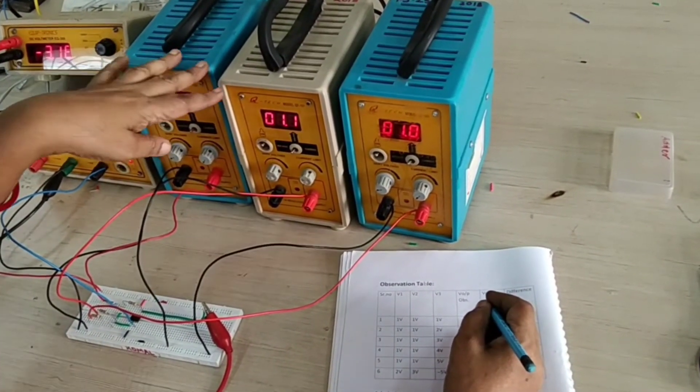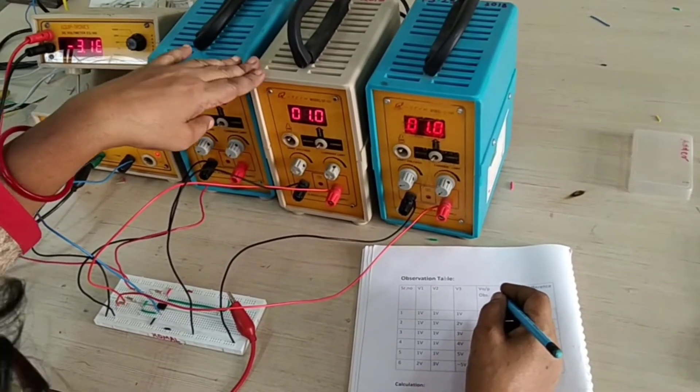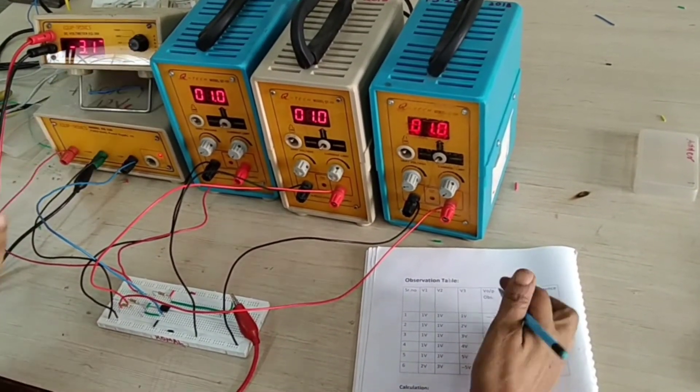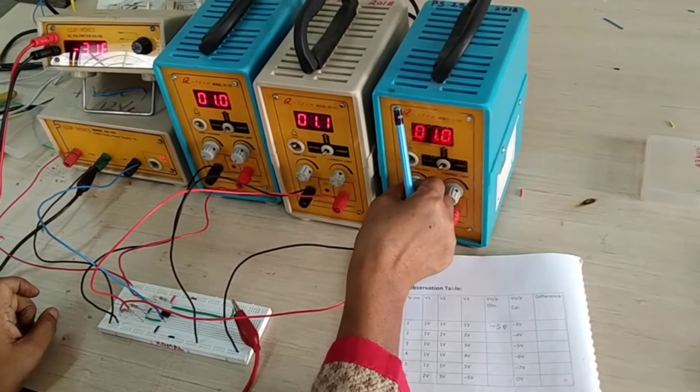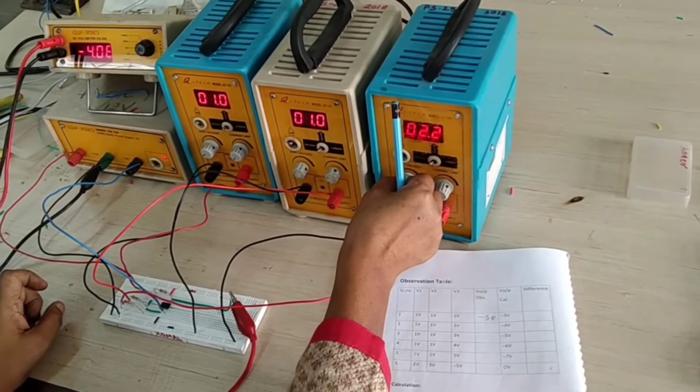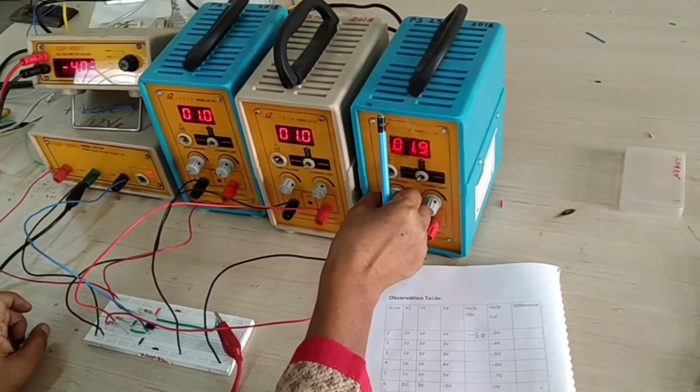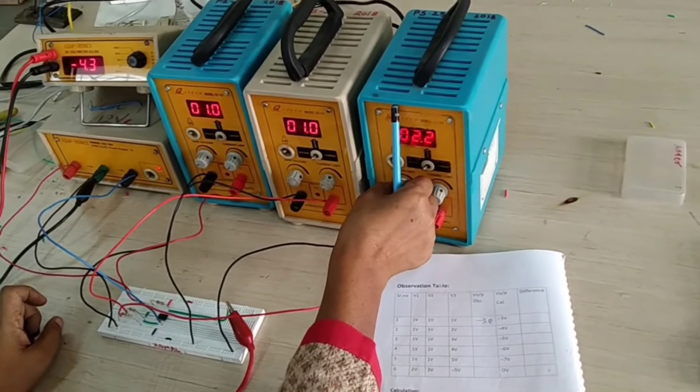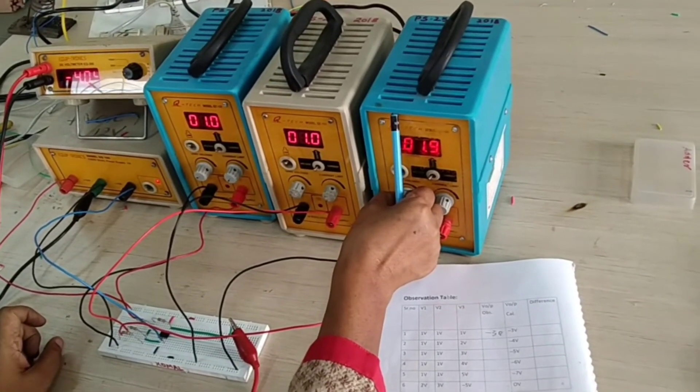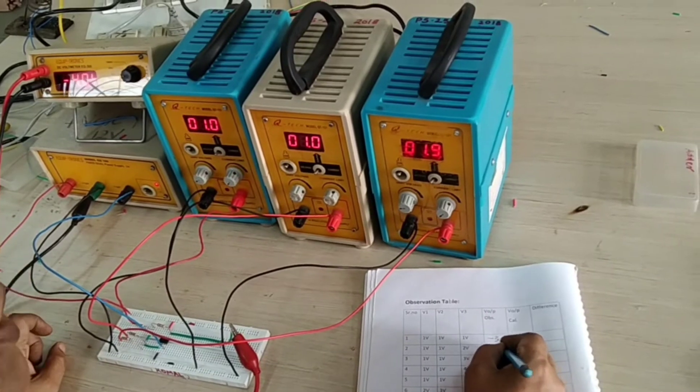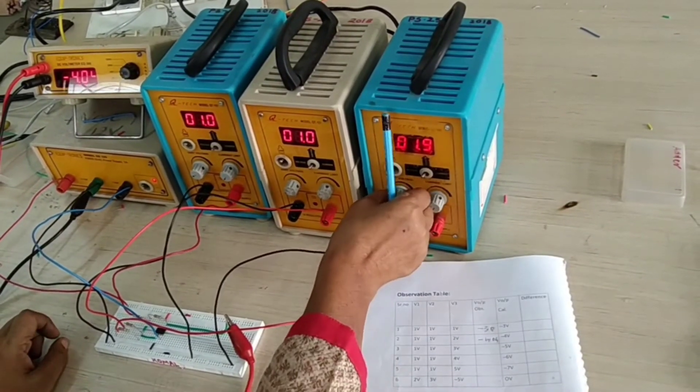Now all two, V1 and V2 remain constant. And we only, we are changing V3. Okay. Now this is, we are taking 2 volt. What is your output is coming? 4.04 minus 4.04. Next is